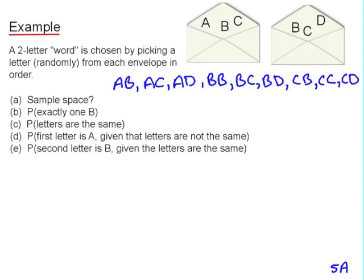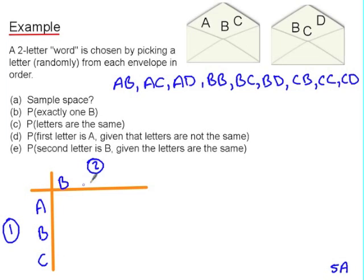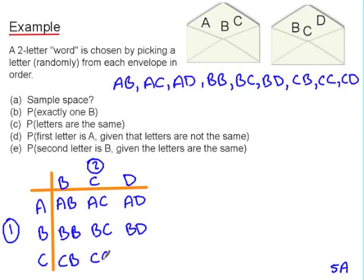I could just as easily have written my sample space in a table. In envelope one we have the letters A, B, C, and in envelope two we have the letters B, C, D. So combining them together in the table, AB, AC, AD, BB, BC, BD, CB, CC, CD.